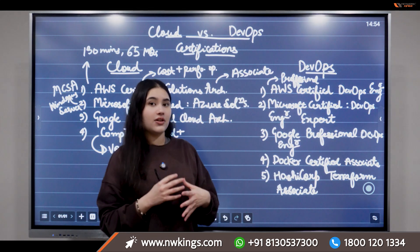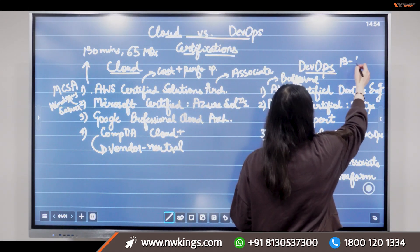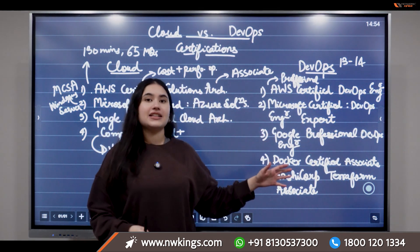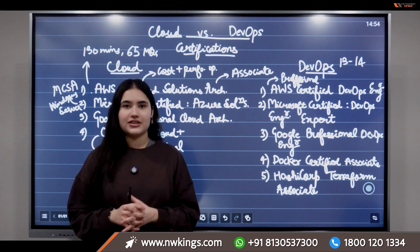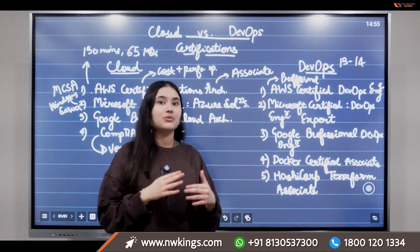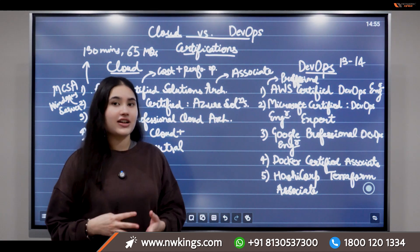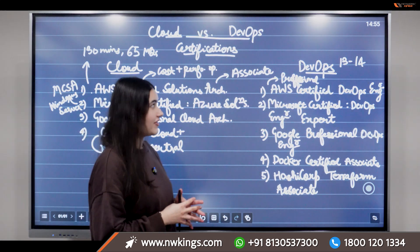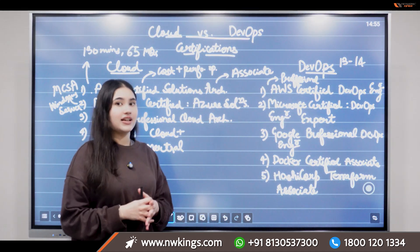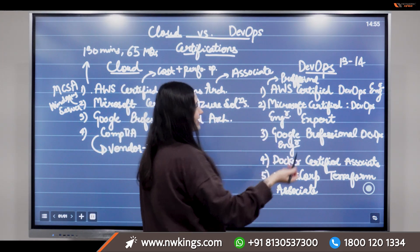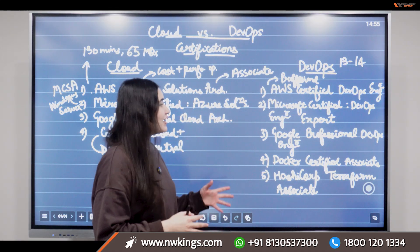In DevOps, you should first learn a wide range of tools and technologies — there are almost 13 to 14 tools covered in the DevOps domain. The DevOps path is mostly taken by working professionals already employed as network engineers, Windows Server administrators, or software developers who want to upskill. The second certification is the Microsoft Certified DevOps Engineer Expert, which is an expert level certification, followed by the Google Professional DevOps Engineer.